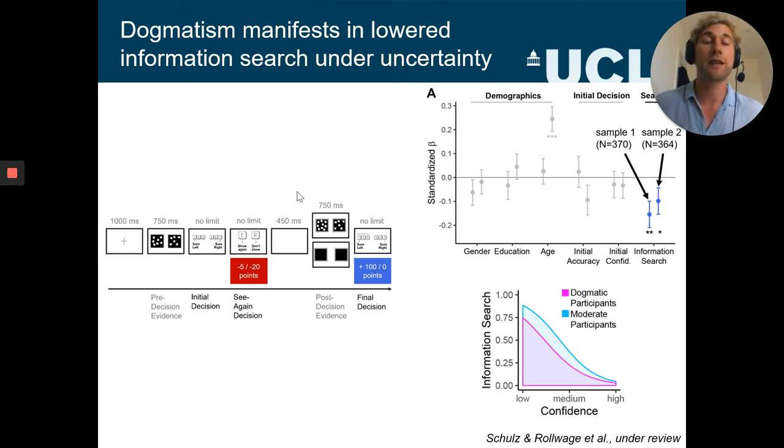So specifically, when dogmatic participants had low confidence in an initial decision, they showed a reduced tendency to seek out more potentially corrective information.